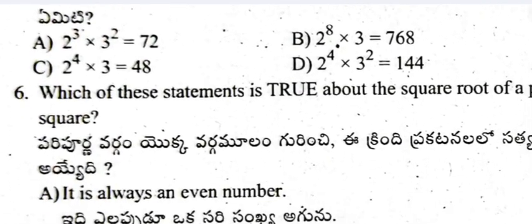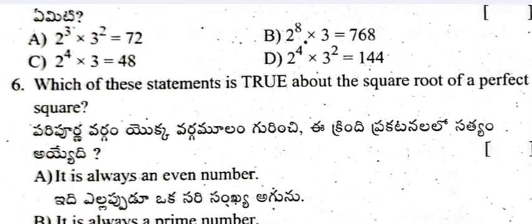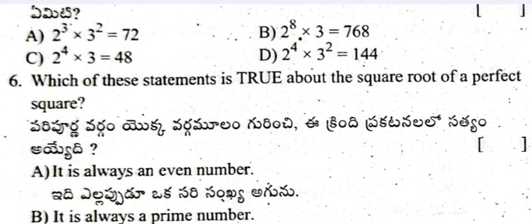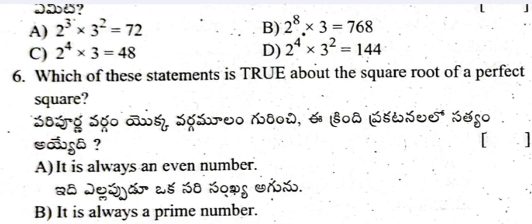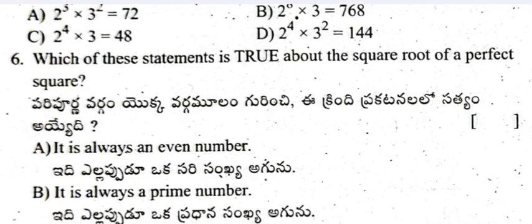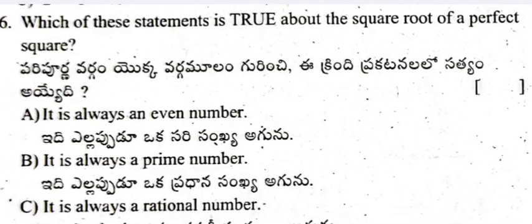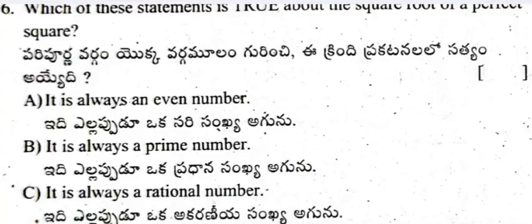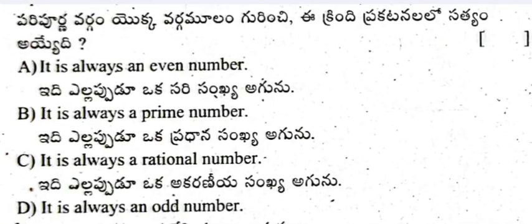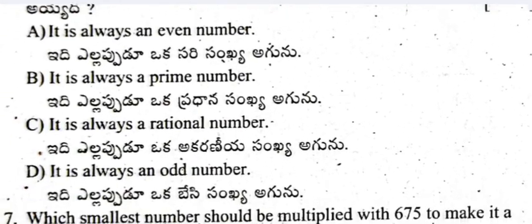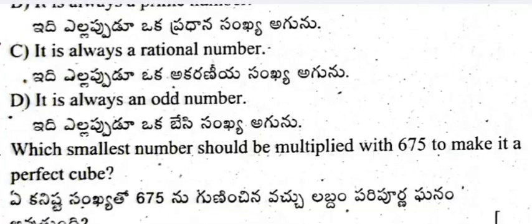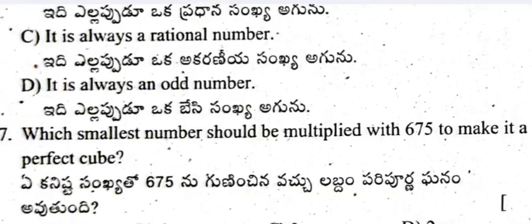Question 6: Which of these statements is true about the square root of a perfect square? Four options are given — A: it is always any one number, B: it is always a prime number, C: it is always a rational number, D: it is always an odd number. Select the correct one.